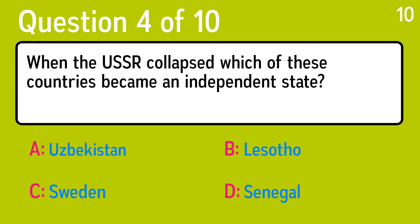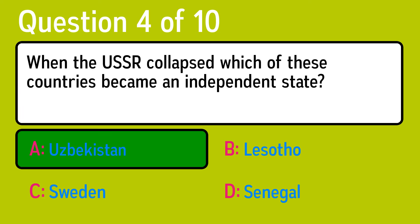Question 4. When the USSR collapsed, which of these countries became an independent state? The correct answer is A, Uzbekistan.